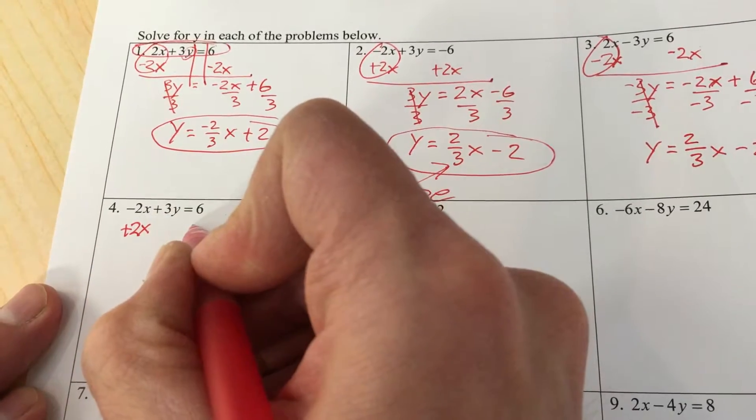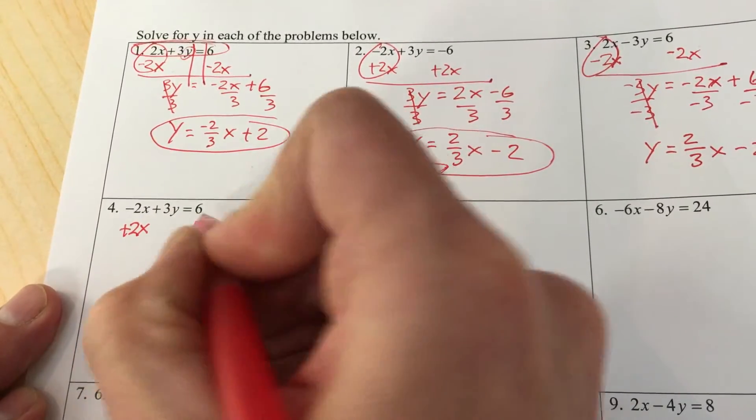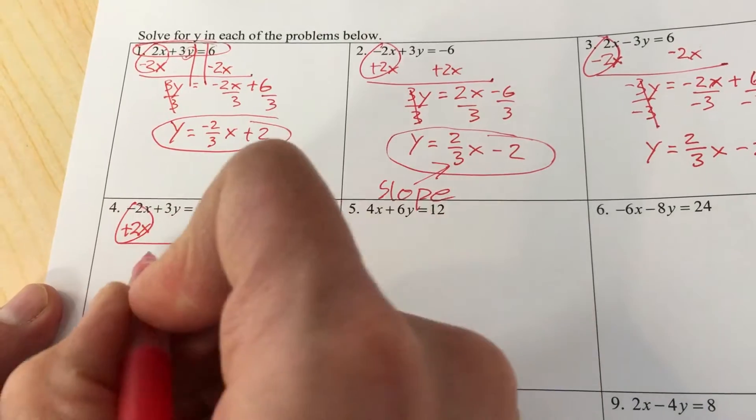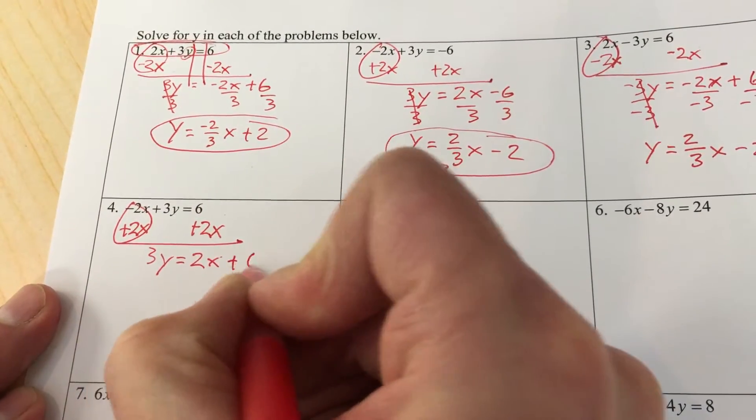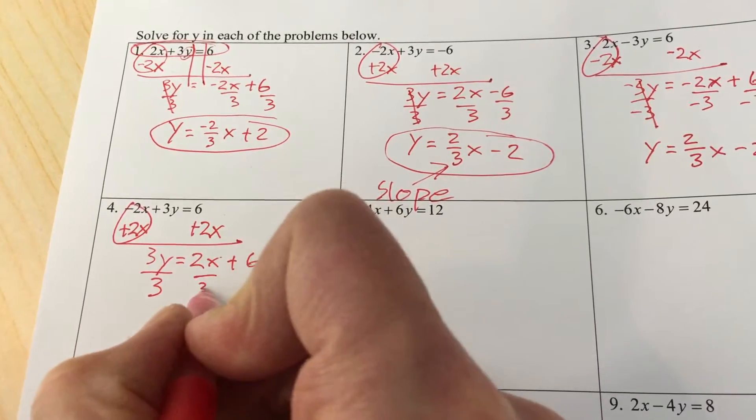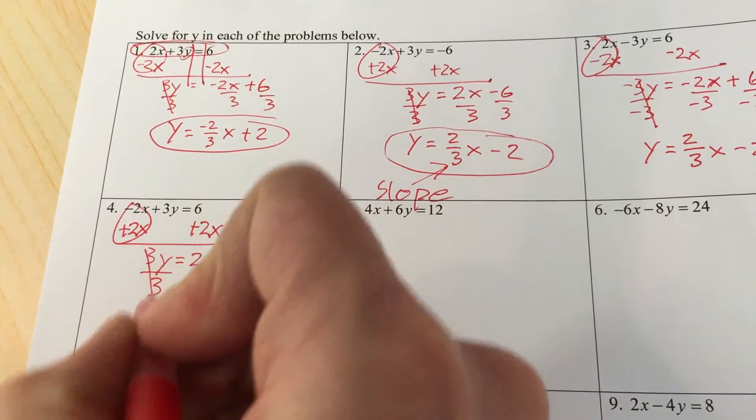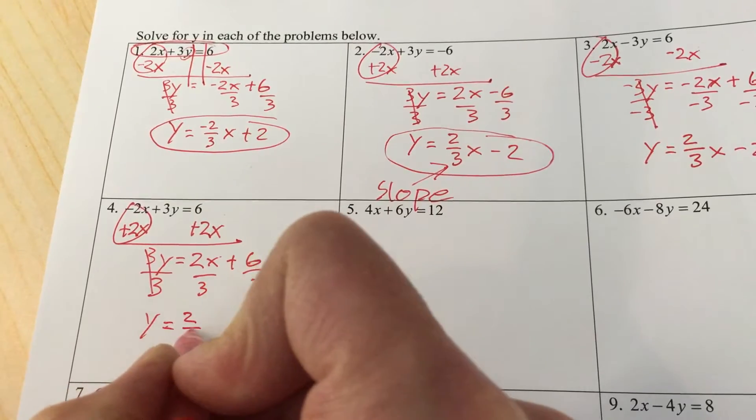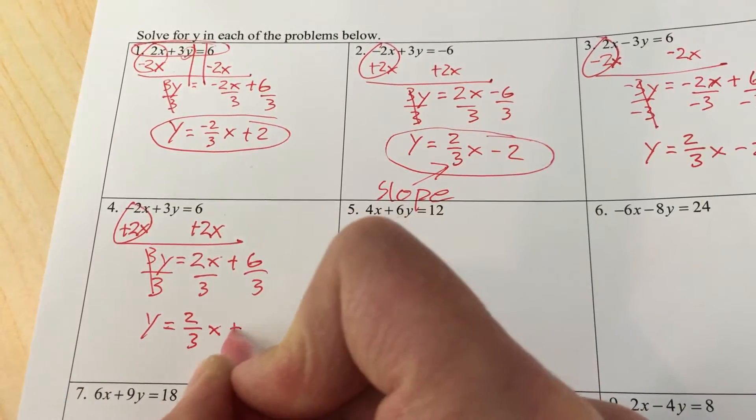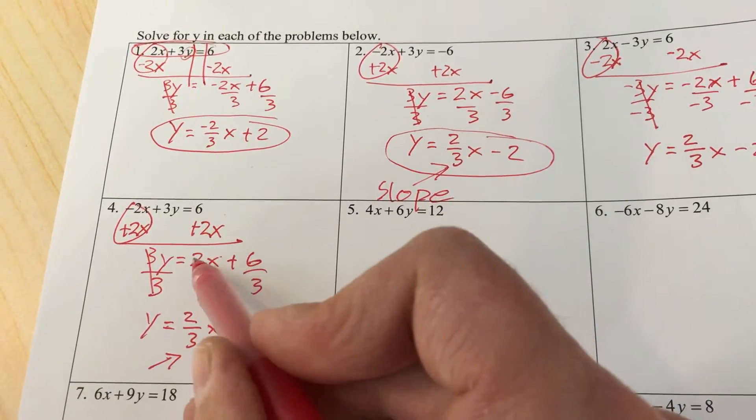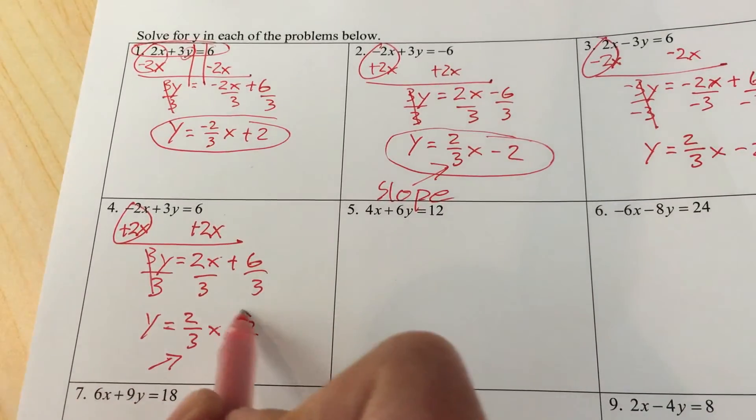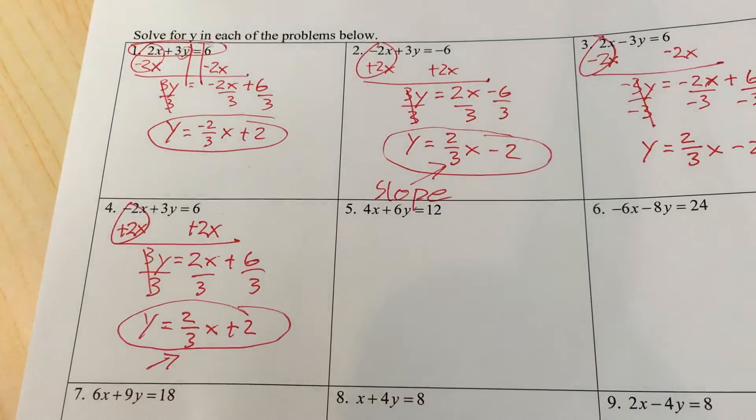Divide by 3 on everything, and we've got y equals 2/3 x plus 2. Again, this is your slope. 6 divided by 3 is 2, 2 divided by 3 stays a fraction, and you are done. That's your two-minute video.